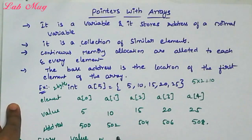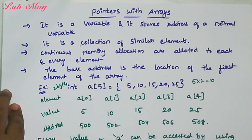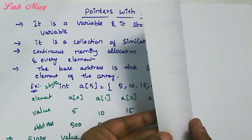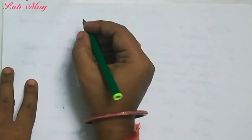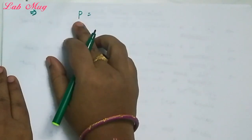Every value of the array 'a' can be accessed by using a pointer. So, for values a[0], a[1], etc., we use a pointer. First of all, we take a pointer variable 'p'.